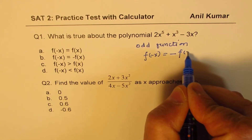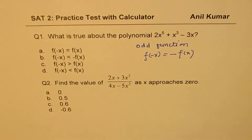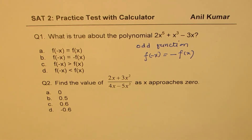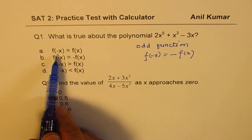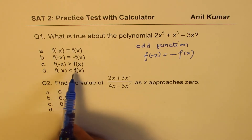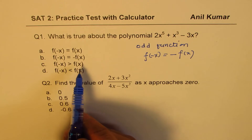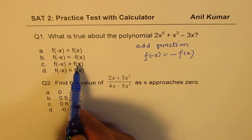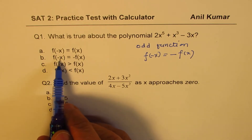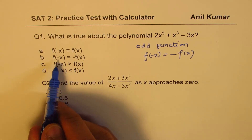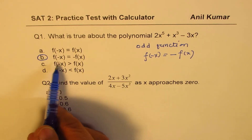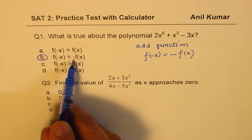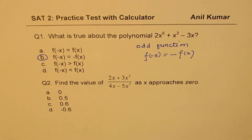For an odd function, f of minus x equals minus of f of x. We have to use this property and answer the question. So f of minus x equals minus of f of x — option B is the right answer.